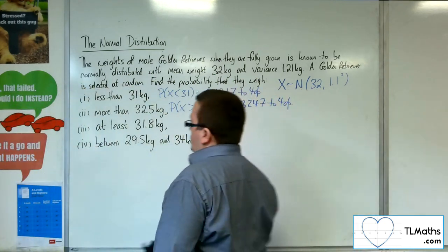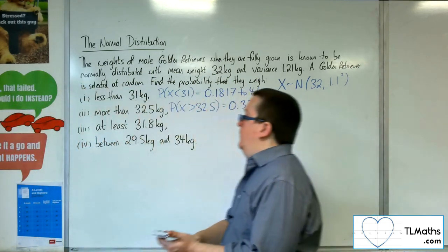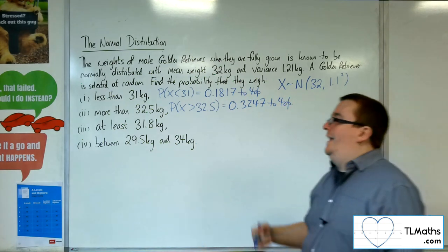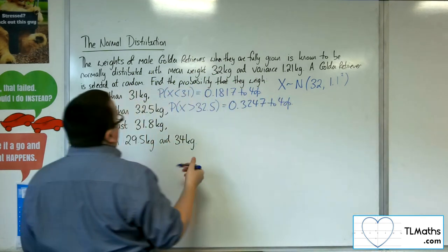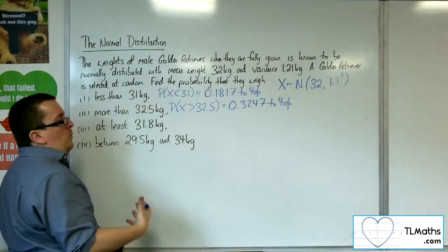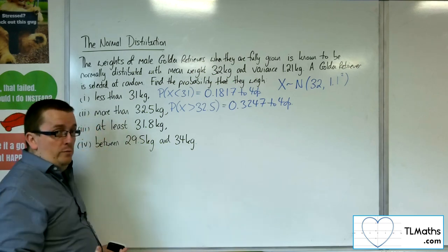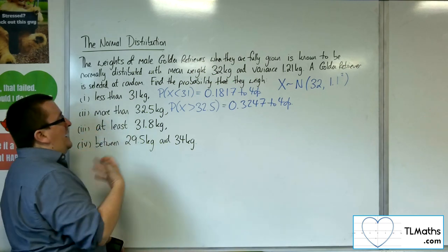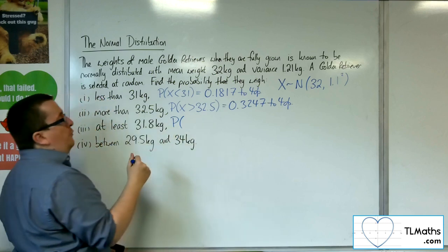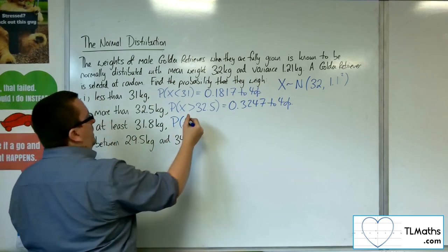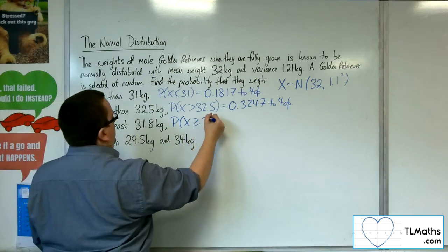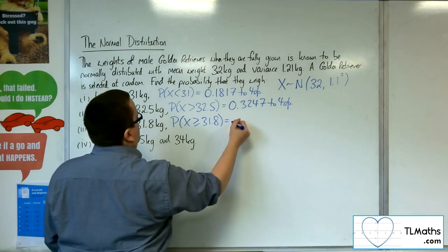Now, number three, I'm just picking out some wording here. At least 31.8. Now, from what we looked at with the binomial distribution, this certainly had some connotations with it. We had to be very careful with what probabilities we're finding. So at least 31.8 would be written like that.